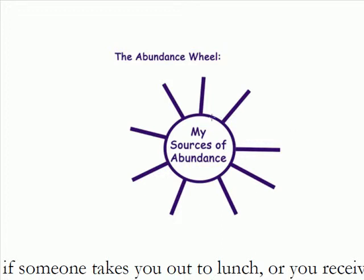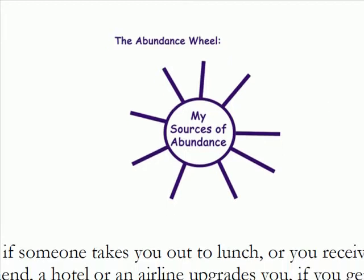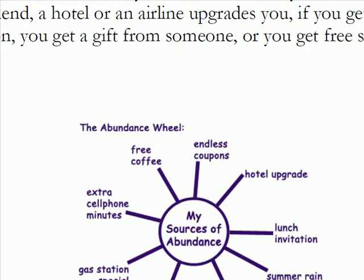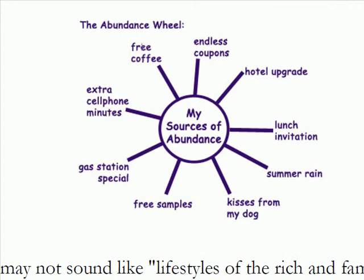In the middle, you have 'my sources of abundance,' and then you have a bunch of spokes — like spokes coming off the hub of a wheel. What you do is look around your life and fill in the end of the spokes with different things that you feel abundant about.